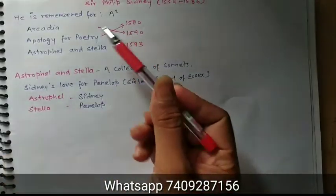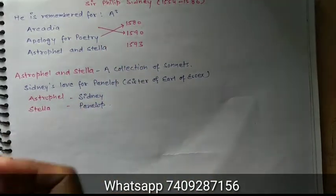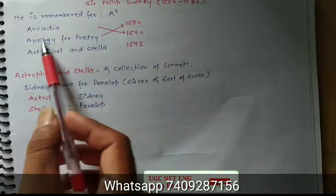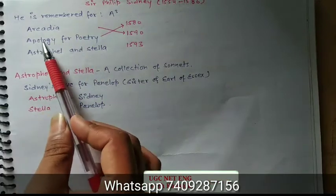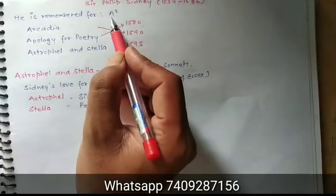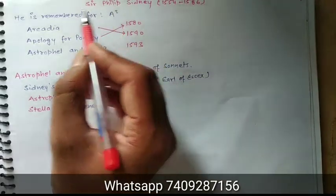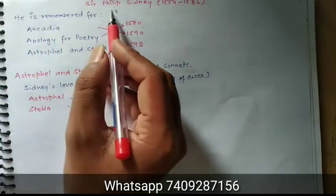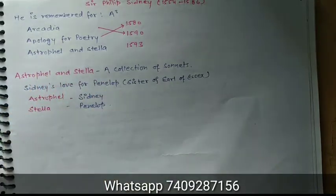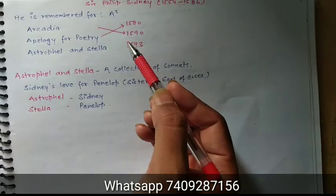First of all, we will have a little knowledge about Sir Philip Sydney. He is remembered for his three works: Arcadia, Apology for Poetry, and Astrophil and Stella. I have written a shortcut — a cue — to remember Philip Sydney's three works: Arcadia, Apology for Poetry, and Astrophil and Stella.